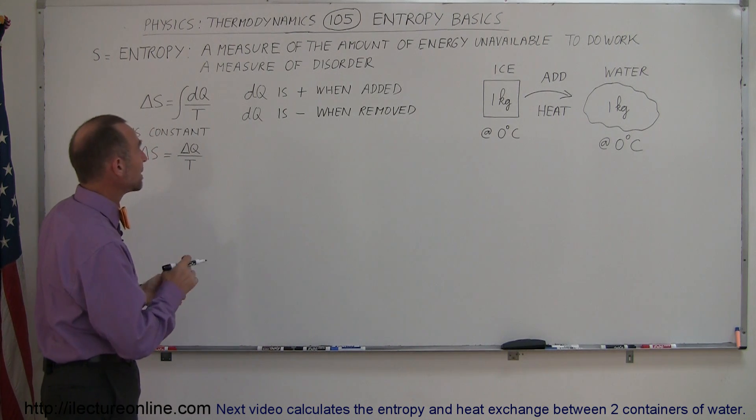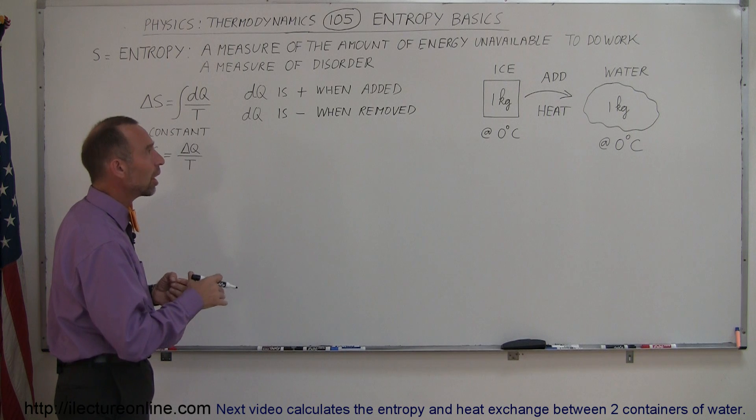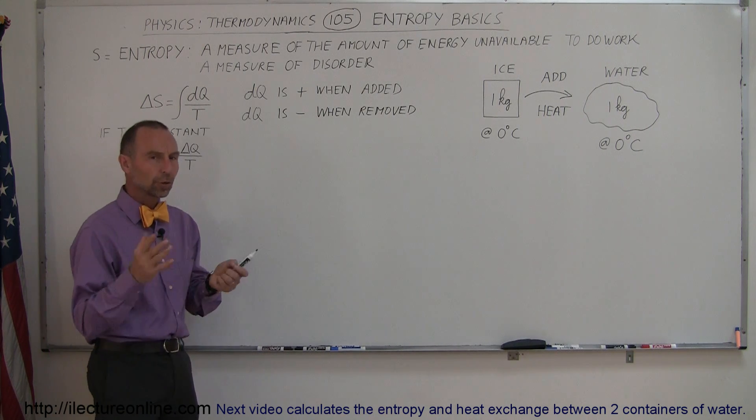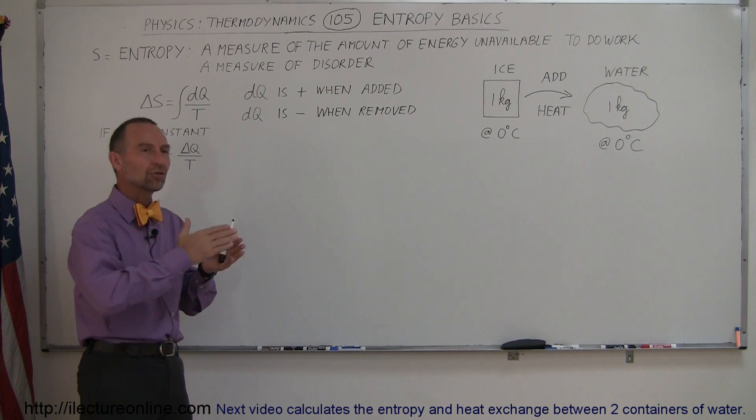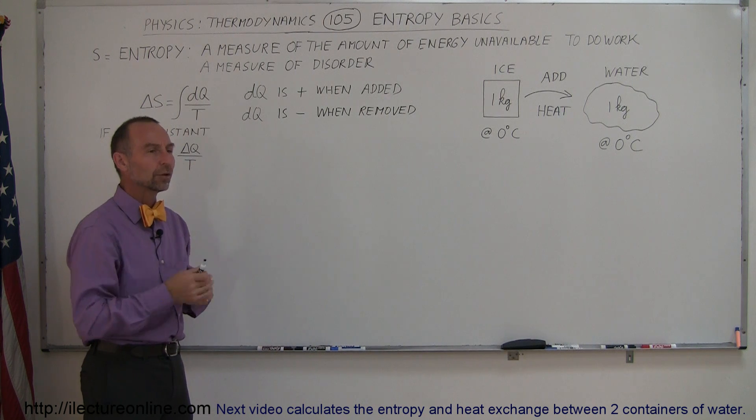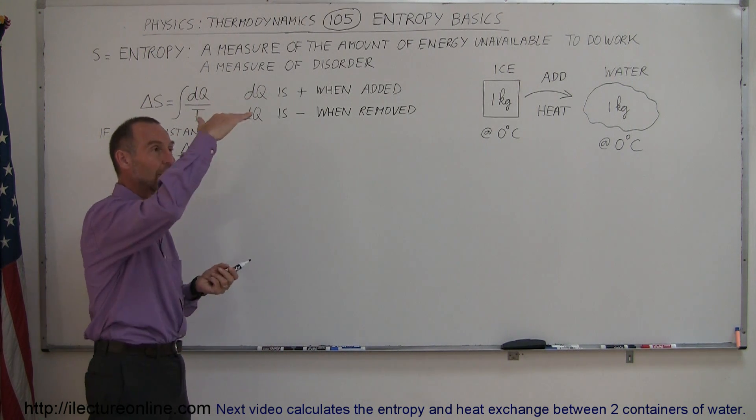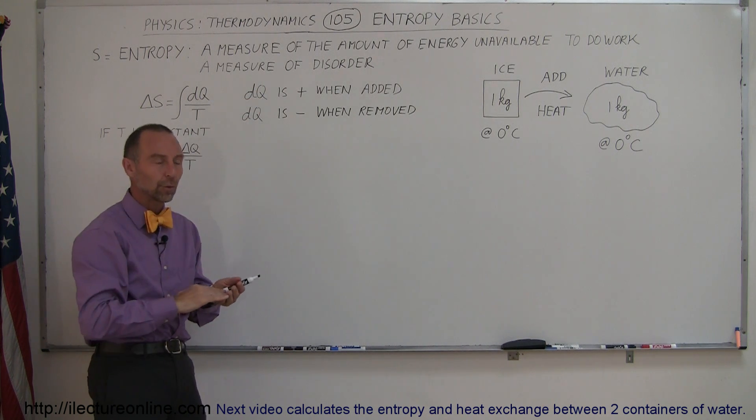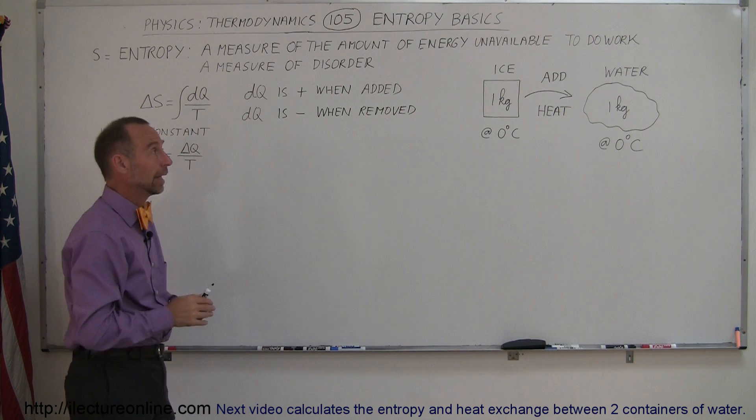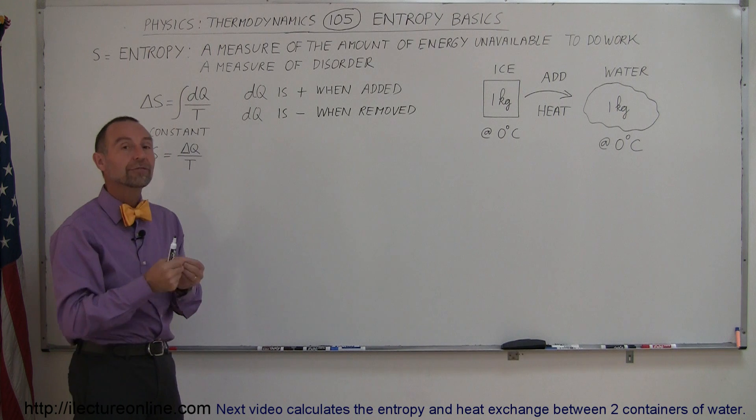The first one we can call it a measure of the amount of energy unavailable to do work. So in thermodynamics we transfer energy from one to another and usually during that process we can use available energy to do work but once it's gone from a hot reservoir to a cold reservoir it's no longer available and so it's a measure of that unavailable energy.